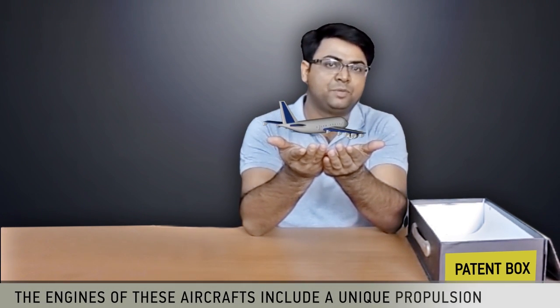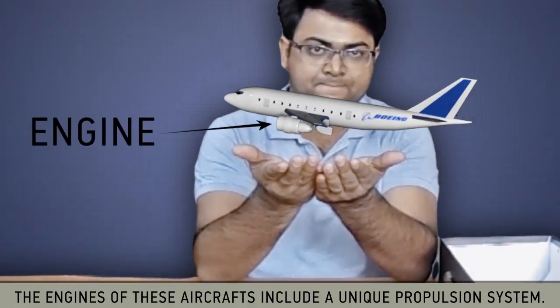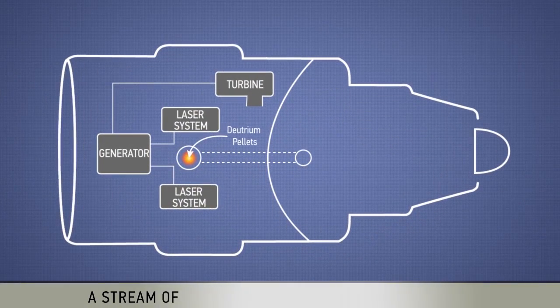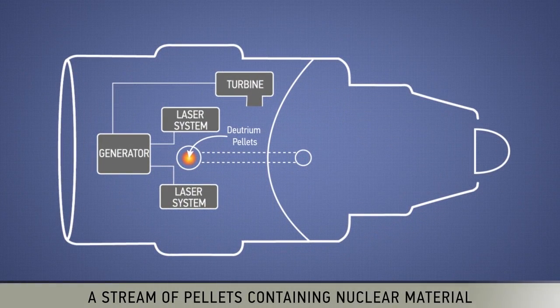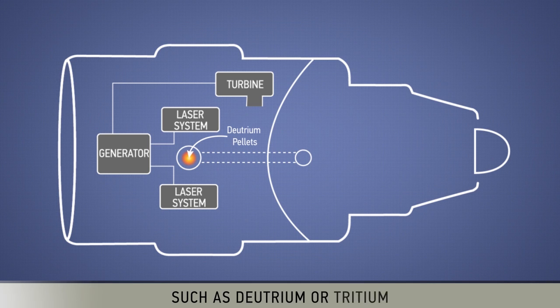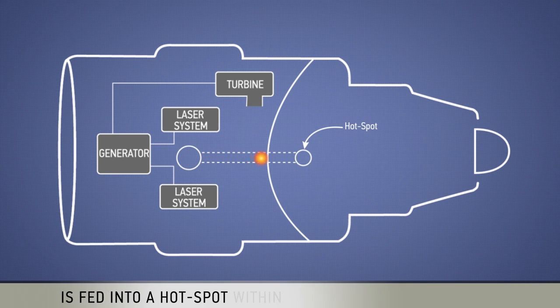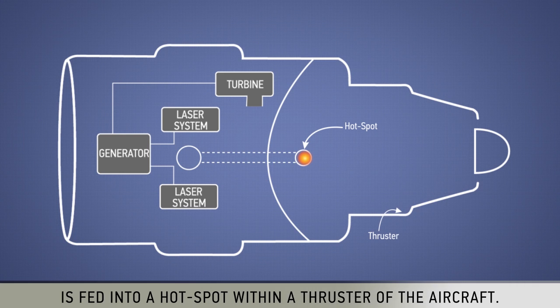The engines of these aircraft include a unique propulsion system. A stream of pellets containing nuclear material such as deuterium or tritium is fed into a hotspot within a thruster of the aircraft.